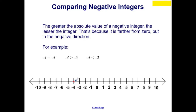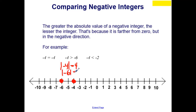We can use negative 4 as an example. Negative 4 is equal to negative 4, so I place it on the same point on the number line. We have negative 4 is greater than negative 6. We can see that negative 6 is farther to the left than negative 4 — or rather, negative 4 is farther to the right — making it greater than negative 6. The absolute value of negative 4 is 4, and the absolute value of negative 6 is 6. So negative 6 has the greater absolute value, making it the lesser integer.